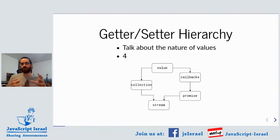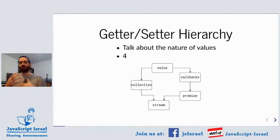Let's talk about the getter-setter hierarchy. As Benji said, we're going to talk about the nature of values. We're going to get a bit philosophical. We're going to start out with four — I chose four because it's my favorite number and the best number. We're going to build up from that into collections, callbacks, promises, and maybe we'll even reach streams and observables.